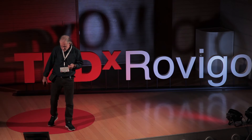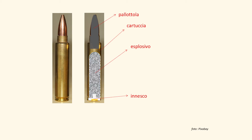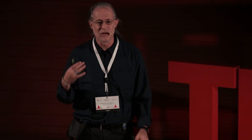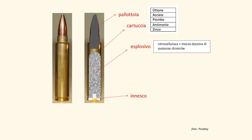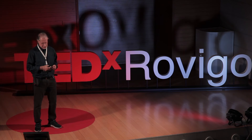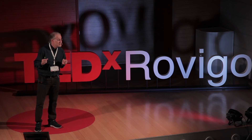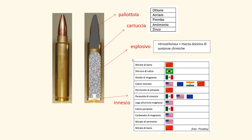Abbiamo cominciato a fare i conti. Questo proiettile è fatto sostanzialmente dalla pallottola, dalla cartuccia, dall'esplosivo e dall'innesco. L'innesco è un dischino di metallo che contiene sostanze chimiche che servono come detonante, ritardante, accelerante, comburente, conservante, per far funzionare bene il proiettile. La parte metallica è fatta da combinazioni di metalli diversi. L'esplosivo è nitrocellulosa. L'innesco, tipicamente, è fatto da metalli più queste sostanze chimiche, di cui francamente non conosco nulla.